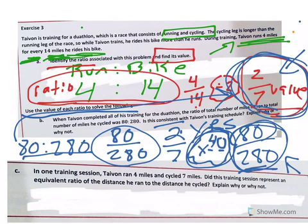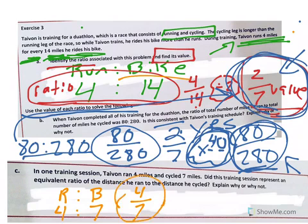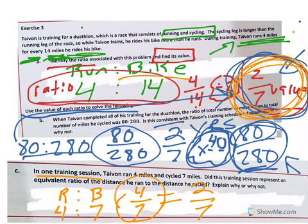Okay. In one training session, Tavon ran 4 miles and cycled 7 miles. Did this one training session represent an equivalent ratio of the distance he ran to the distance he cycled? Explain why or why not. Well, we know he ran and used his bicycle. Well, in this particular one, he went 4 to 7. We can look at that as 4 sevenths. That value, I can't simplify. So that is the value. 4 sevenths of that one training session is the value. Is that the same of the value that we already found up here, 2 sevenths? Well, the denominators are the same, but the numerators are different. So that, in fact, is not. So this training session did not represent an equivalent ratio because the values were different.